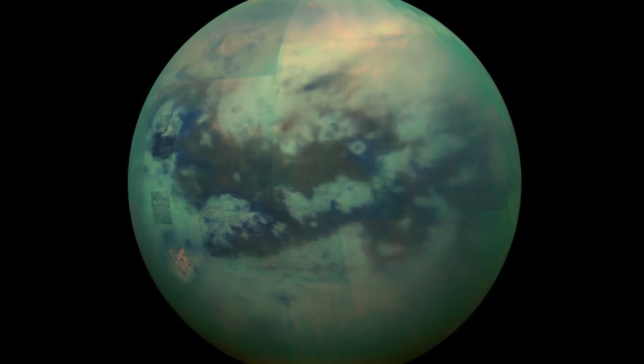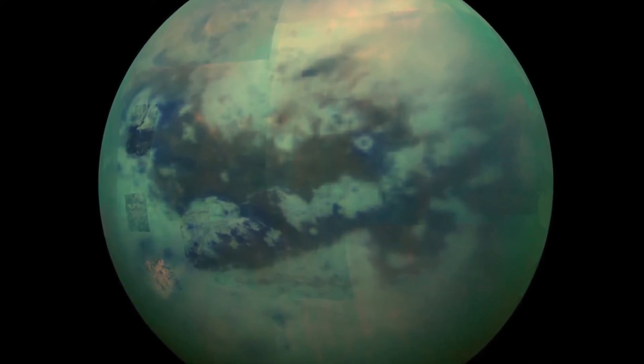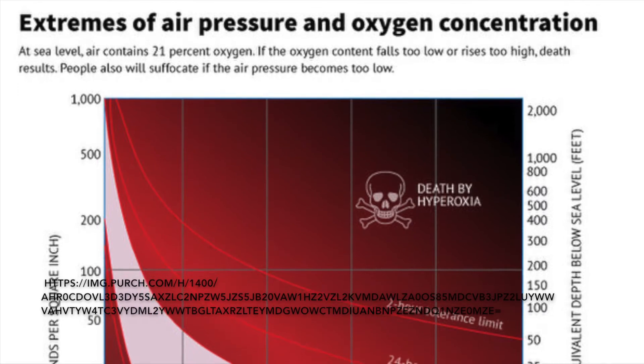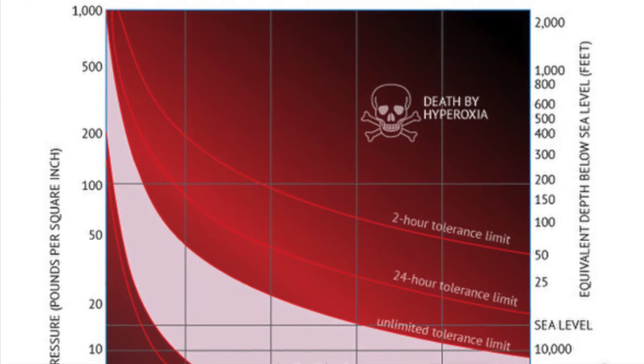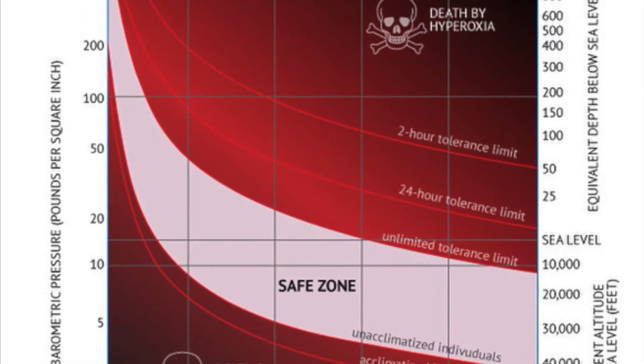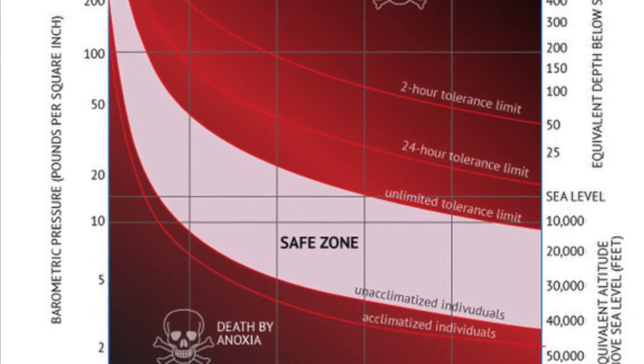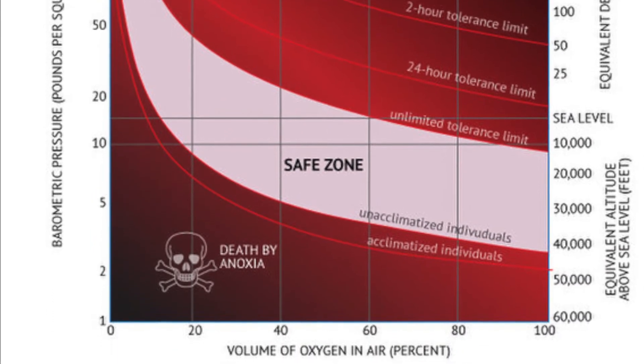The exact ratios of oxygen to nitrogen, helium, or hydrogen, or even neon or sulfur hexafluoride or even argon, would depend ultimately on the atmospheric pressure of the planet. The higher the pressure, or bar, the lower the oxygen we would need to prevent oxygen toxicity. The lower the pressure, the more oxygen we would need to not asphyxiate.